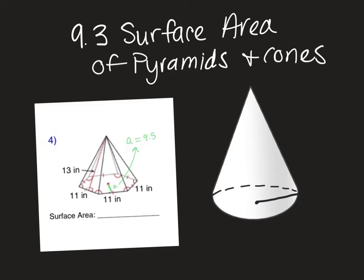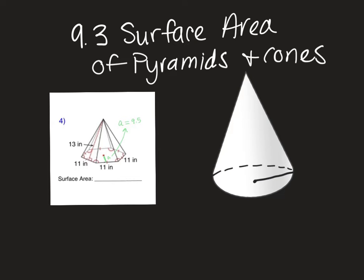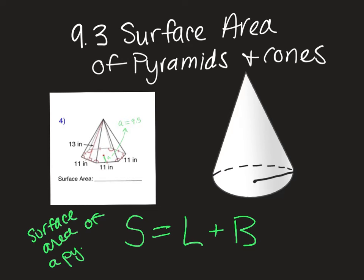All right, so we've got basically the same kind of concept as we did with surface area of prisms and cylinders. But these, I think, honestly are a little bit easier because there's just one less step. So the surface area of a pyramid is going to be the lateral surface area plus the area of the base. Right, since there's only one base for these, we don't have to multiply it by two. That's for a pyramid.